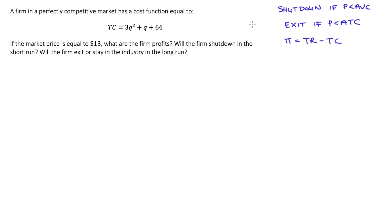I've written on the side here just some rules we need to know. The rules applicable to this question are: the firm will shut down if the price is less than average variable costs, and the firm will exit in the long run if the price is less than average total cost. So the shutdown rule is for the short run, and the exit rule is for the long run. Profit equals total revenue minus total cost.